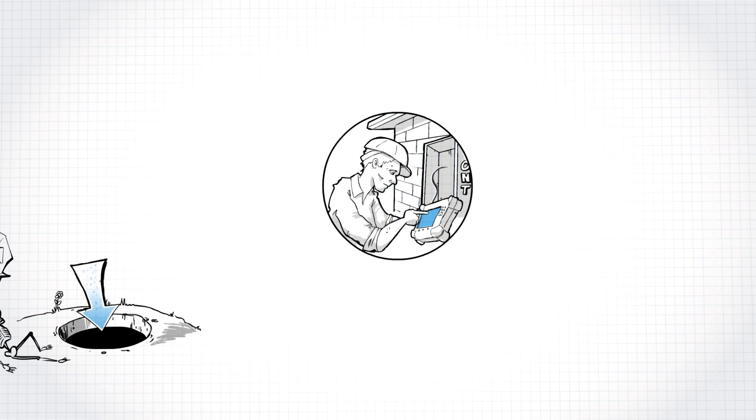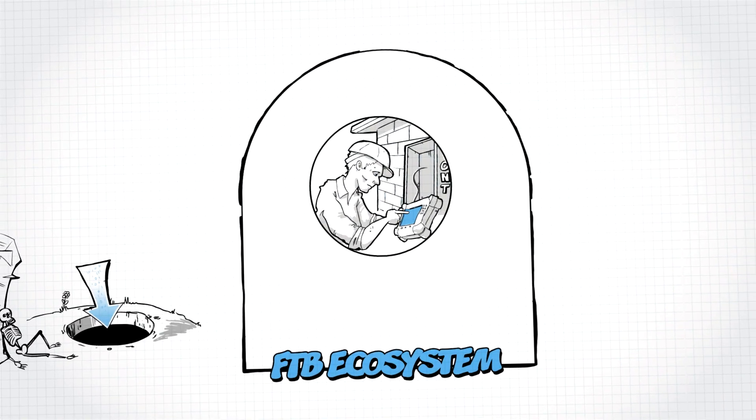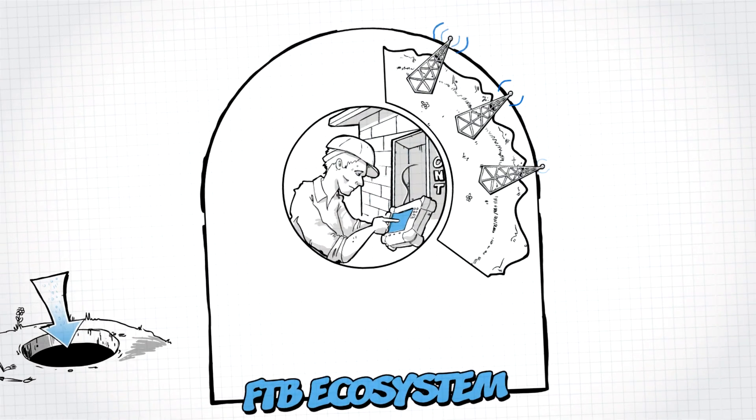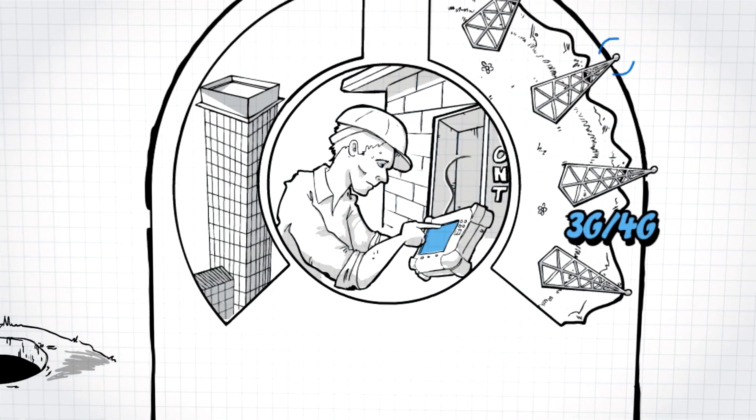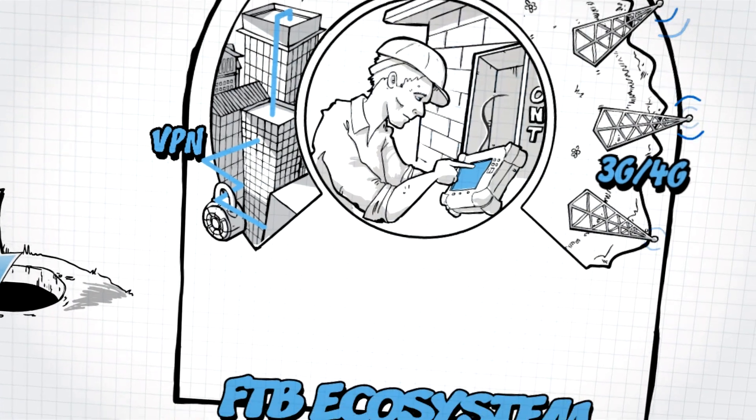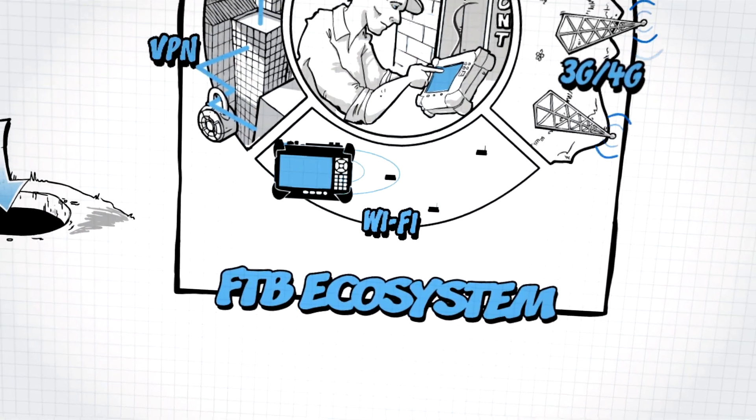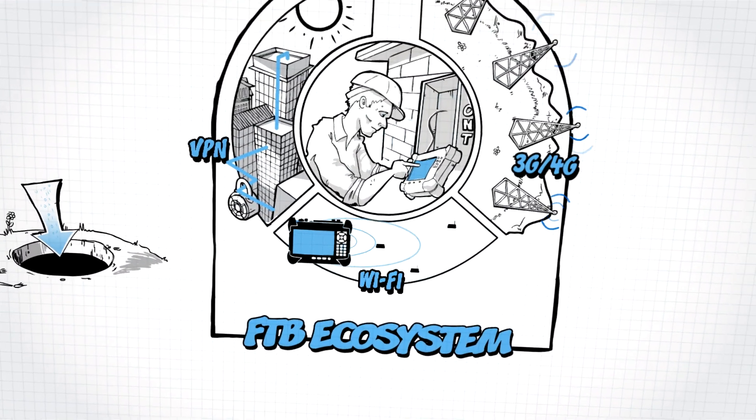EXFO has what it calls the FTV ecosystem of platforms. Units are connected in real-time. They have 3G or 4G. They can use VPN to connect to your corporate network. They use Wi-Fi. They have all these ways of interconnecting your fleet of instruments.